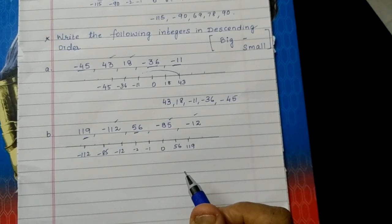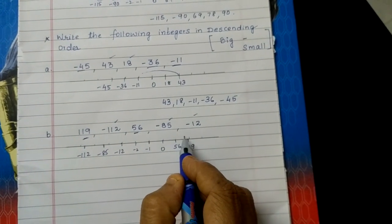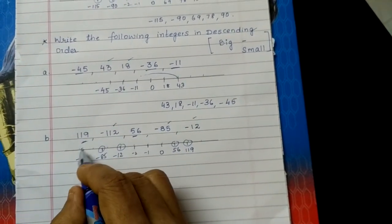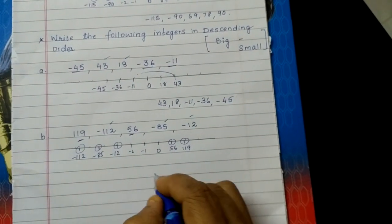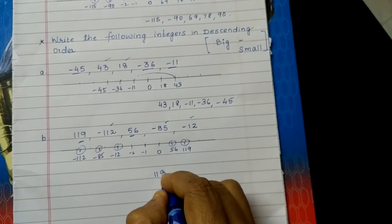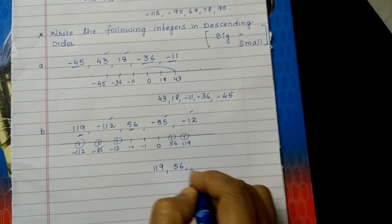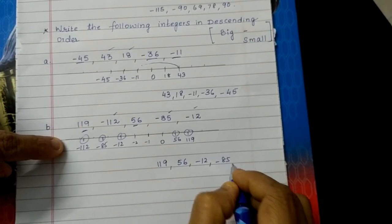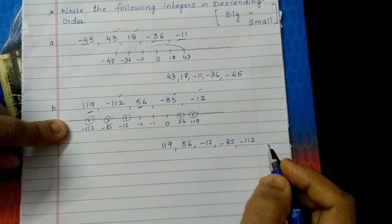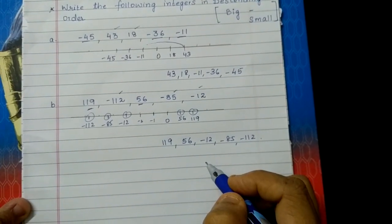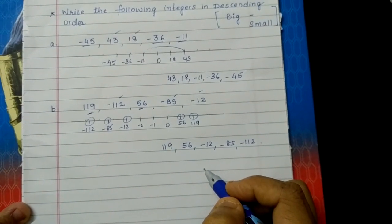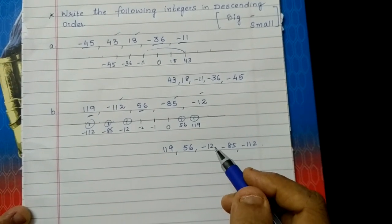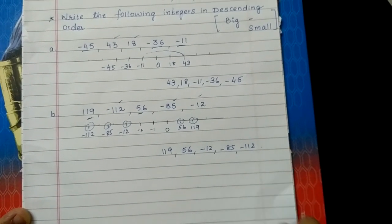Because it is descending order we will move from right to left on a number line, so the answer is: 119, 56, minus 12, minus 85, and minus 112. Children, if you practice on a number line there will be a time when without a number line you can visualize and do ascending and descending order.